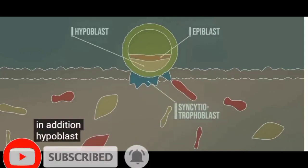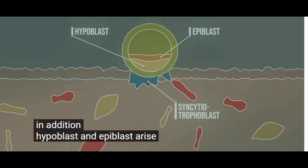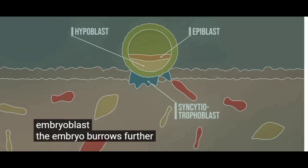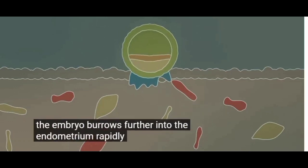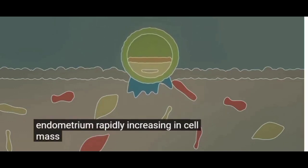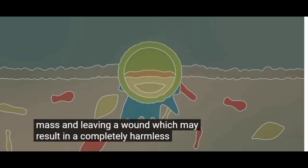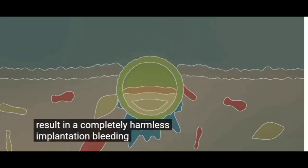In addition, hypoblasts and epiblasts arise from the embryoblast. The embryo burrows further into the endometrium, rapidly increasing in cell mass and leaving a wound, which may result in a completely harmless implantation bleeding.